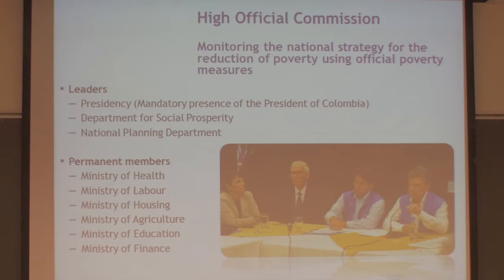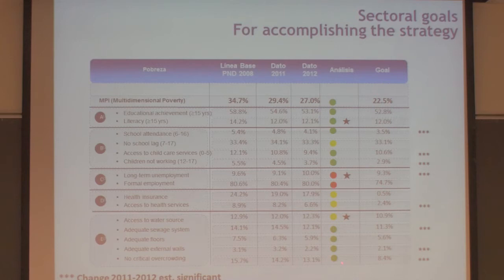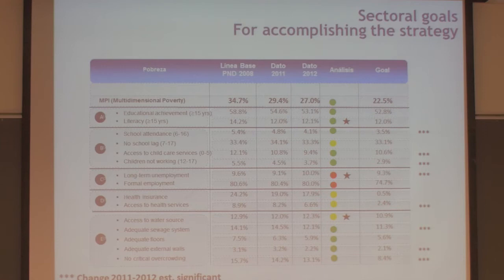The president of Colombia set up a roundtable where he and the ministers were present — ministers could not send delegates. They used a stoplight depiction of the 15 indicators in the five dimensions of Colombia's MPI. They saw which indicators were changing and which were not — for instance, unemployment and formal employment not improving. If statistically significant, they asked: what do we need to do? That's a simple example of how it was being used, and it has cascaded to different levels of government.